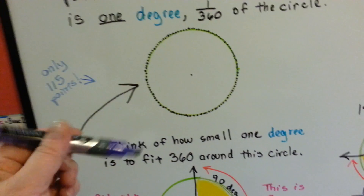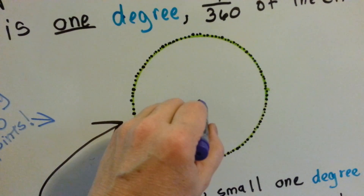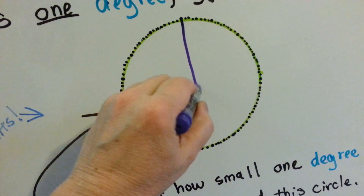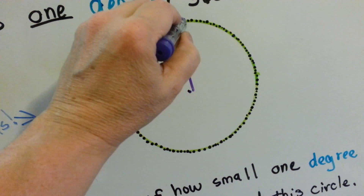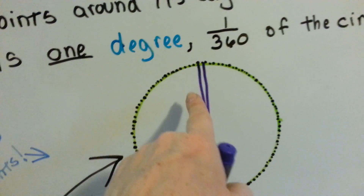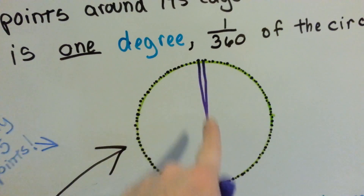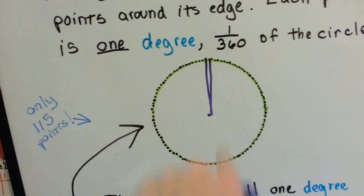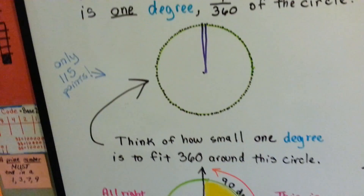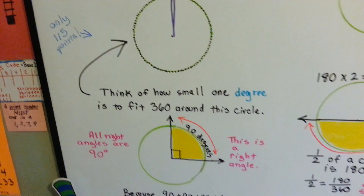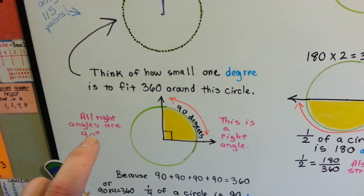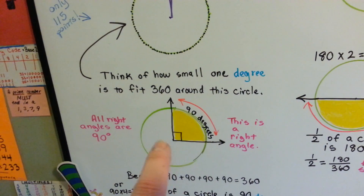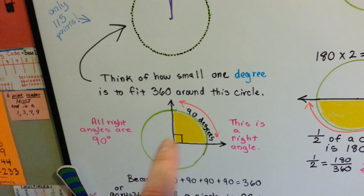A 1-degree angle would start here and it would just be one of these tiny little — but see, this is 115, so it would be even tinier than that for a 1-degree angle. All right angles, like this — the square angles — are 90 degrees.